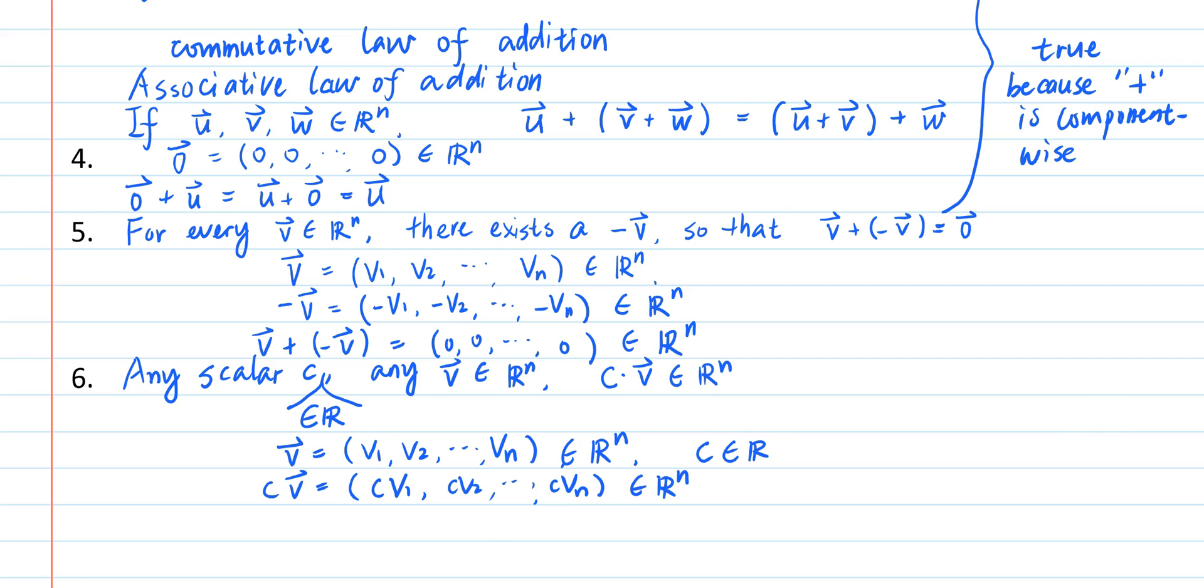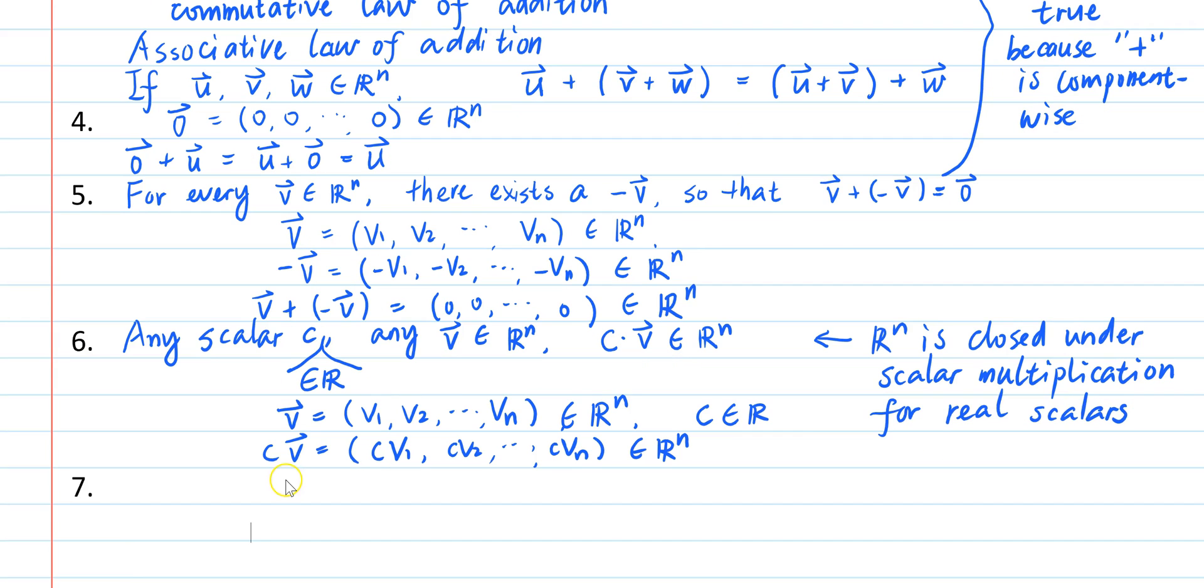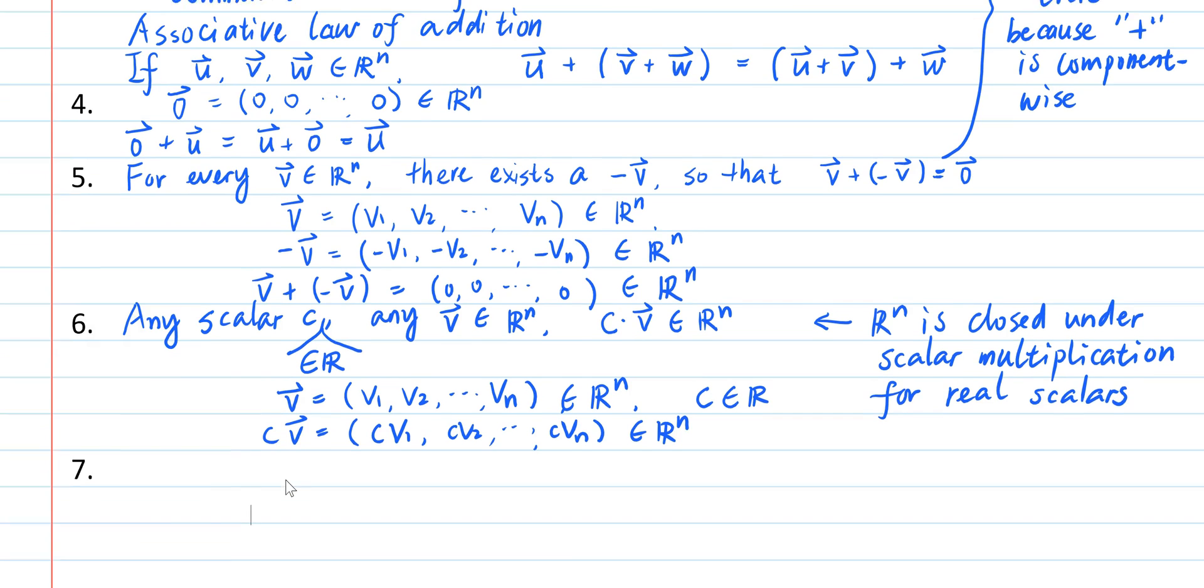And it is again R^n. This property is called the closed under scalar multiplication property. So R^n is closed under scalar multiplication for real scalars. Okay, six down, four to go.